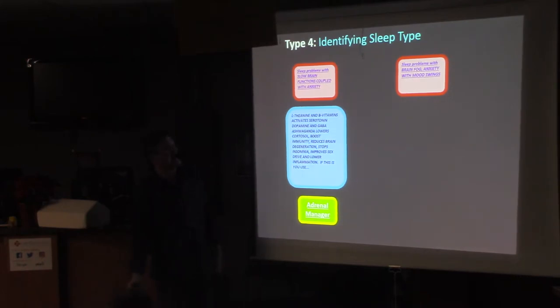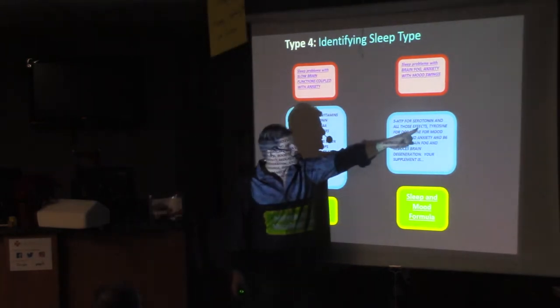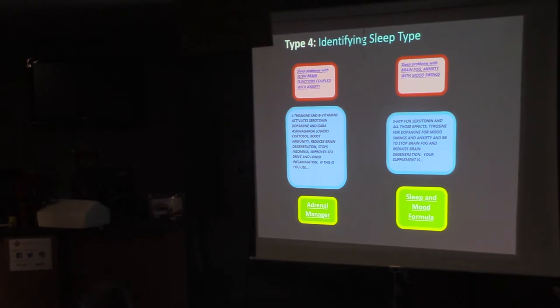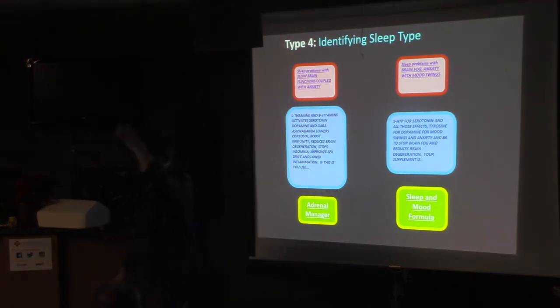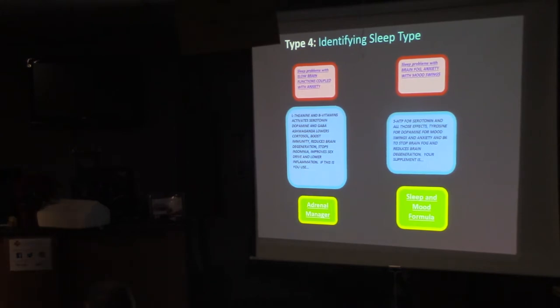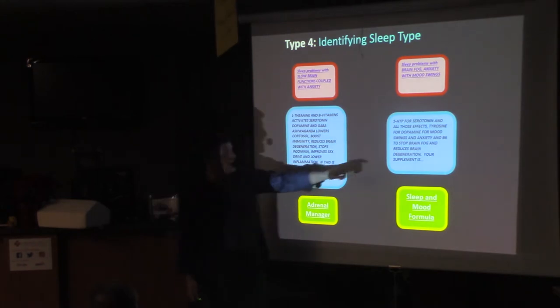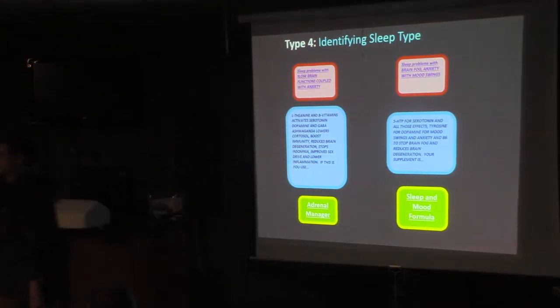Sleep problems with brain fog, anxiety, and now I've got mood swings tied to it. I am just up and down. This is your wife during that time of the month, right? Maybe this is what she needs. So you need some sleep and mood formula. 5-HTP for serotonin and all the effects we've talked about. Tyrosine now. Tyrosine is a precursor to adrenaline, all your adrenaline hormones. Tyrosine for dopamine, there's your mood swings and anxiety. B6 stops the brain fog. Your 5-HTP goes this way and becomes serotonin. If your body becomes chronically inflamed, it runs down this way and becomes something called quinolinate. And quinolinate is huge for brain inflammation and Alzheimer's and dementia degeneration. The B6 stops the brain fog, reduces brain degeneration, and sleep and mood formula has that combination.